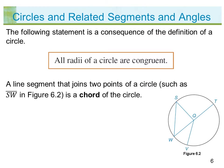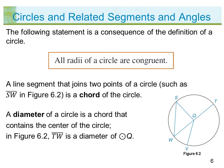A line segment that joins two points of a circle, such as segment SW in figure 6.2, is a chord of the circle. A diameter of a circle is a chord that contains the center of the circle. In figure 6.2, segment TW is a diameter of circle Q.